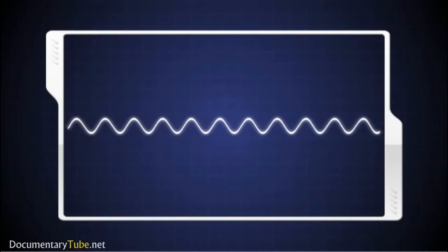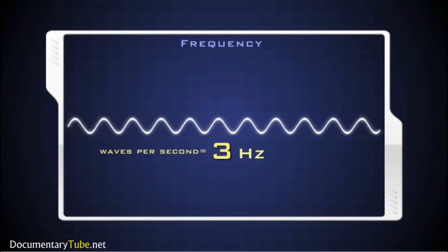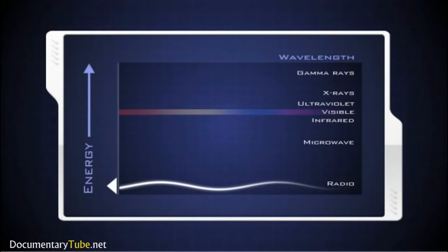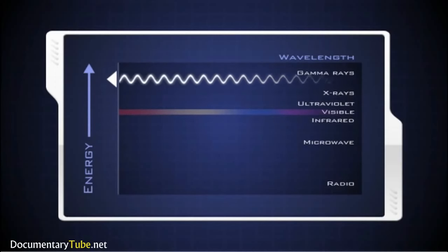The number of these crests that pass a given point within one second is described as the frequency of the wave. One wave, or cycle, per second, is called a hertz. Long EM waves, such as radio waves, have the lowest frequency and carry less energy. Adding energy increases the frequency of the wave and makes the wavelength shorter. Gamma rays are the shortest, highest energy waves in the spectrum.